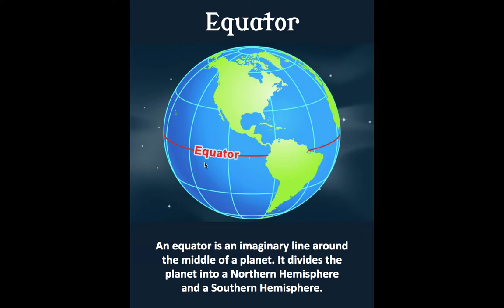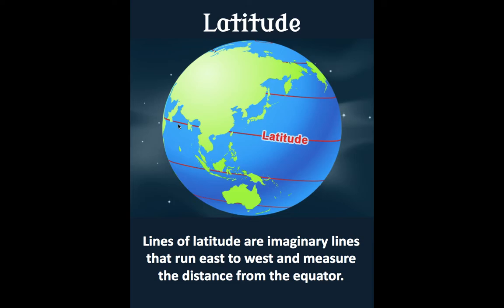We can also measure how far we go from the equator — how far north we go, or how far south we go. See these little lines here? They tell us how far we're going. We call those lines the lines of latitude. Lines of latitude are imaginary lines that we draw on a globe that run east to west, or west to east, and they measure the distance from the equator. This line of latitude is a little ways from the equator. This line of latitude up here is a longer ways from the equator. This line of latitude way up north is a great distance from the equator. And we can say the same things about the lines of latitude to the south.